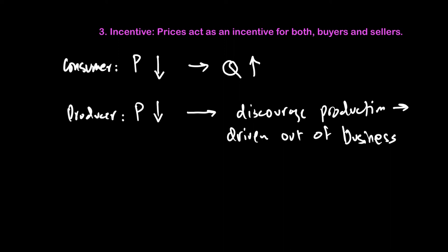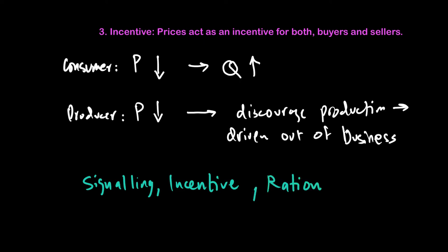To conclude, price plays a role in providing signals to producers and consumers, acting as an incentive for both consumers and producers to react to it, and it is a way to distribute or ration goods and services. Despite that, we will find that government intervention is needed. So let's talk about why we need government intervention — why is government required when price is already doing such a good job?